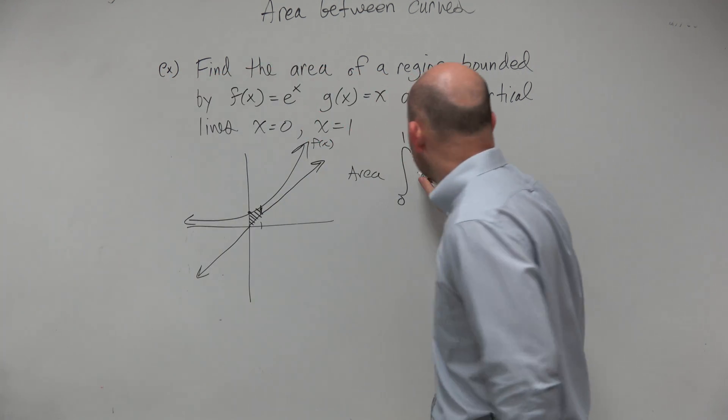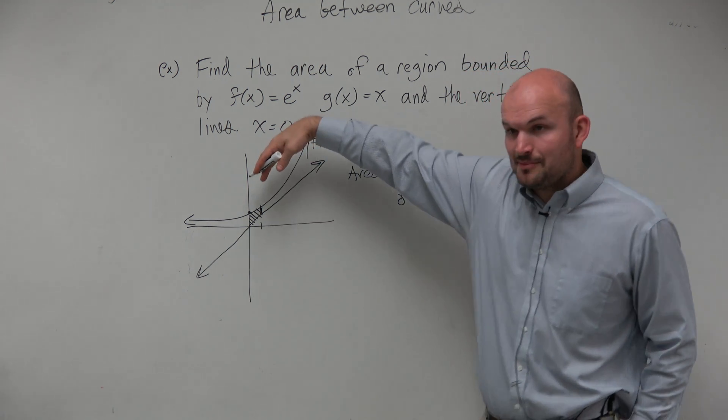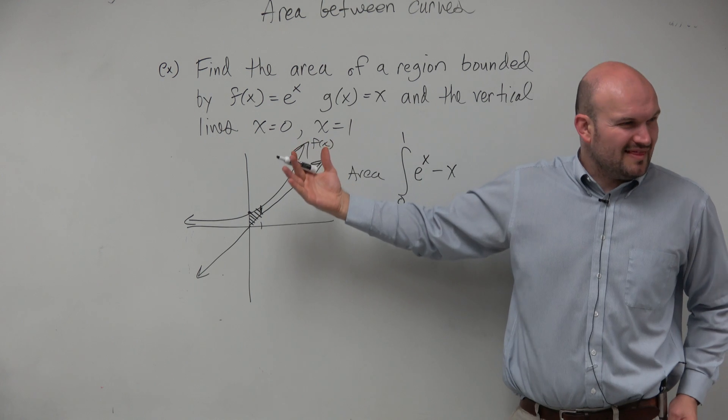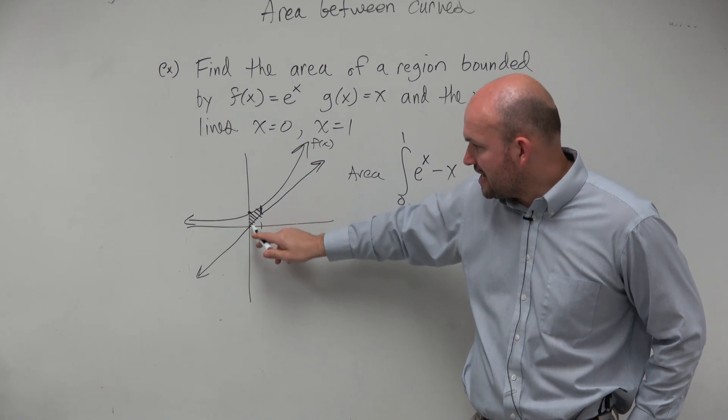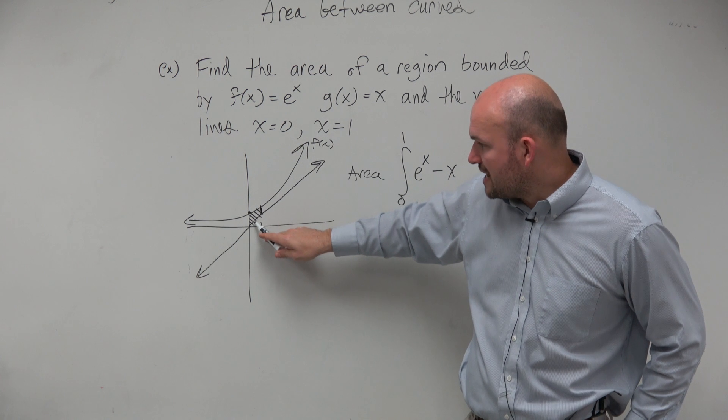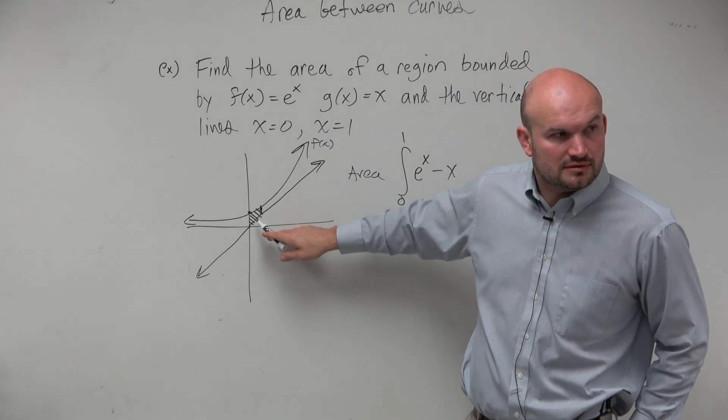So we're basically taking it from e to the x minus x, the top curve minus the bottom curve. And that kind of makes sense too. If you figure out the area under e to the x is everything under there, and then you're subtracting away the area there, that's just going to give the area of the region. Does that make sense?